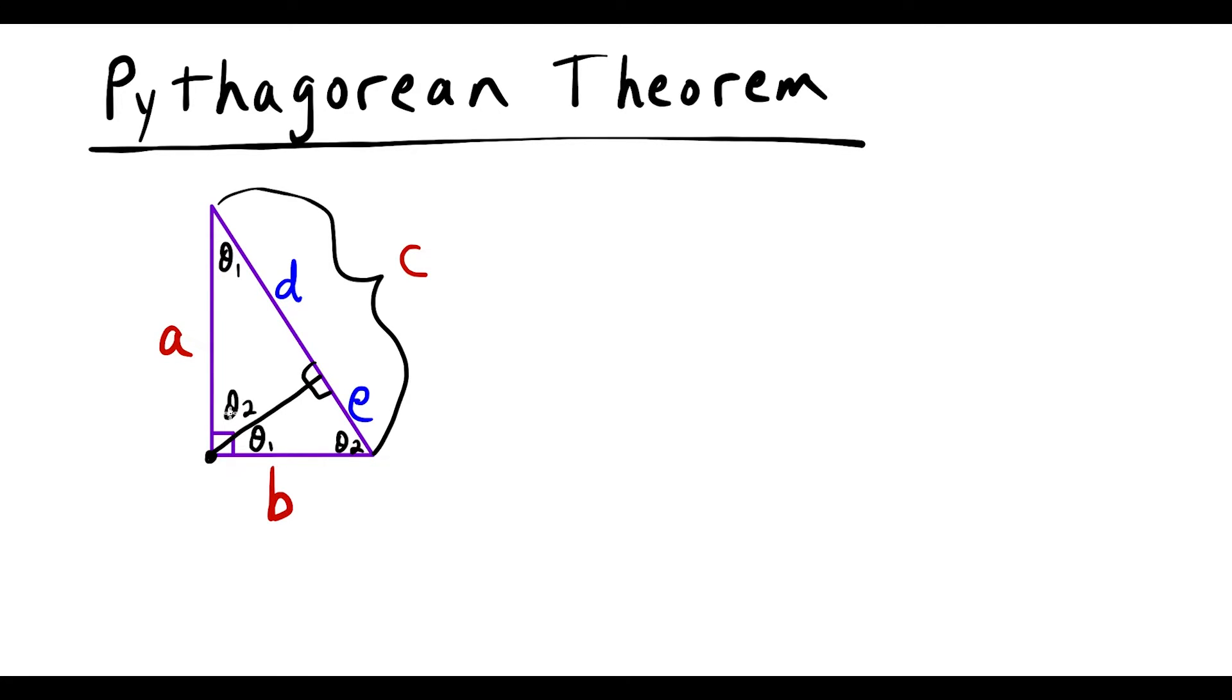And note here that theta 1 plus theta 2 equals 90. So this is all checking out. So we have three similar triangles.